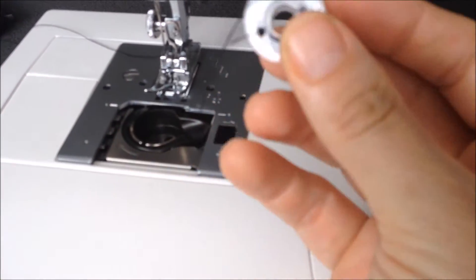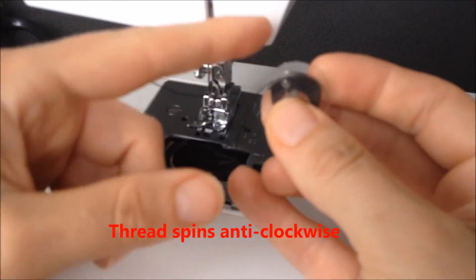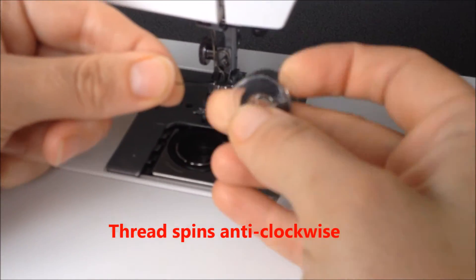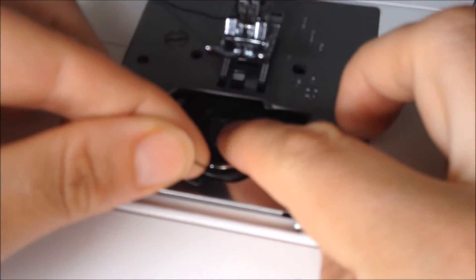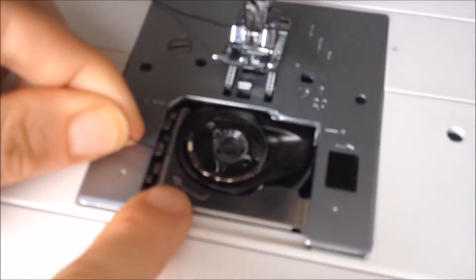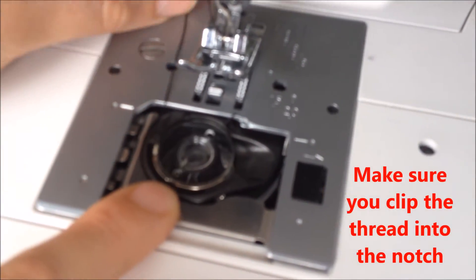You take your bobbin. Now it's really important that your bobbin is spinning anti-clockwise and that your thread is coming off to the left. Place it in the little bobbin capsule and you also need to clip it into this little steel clip here and then your cotton goes out to the back.